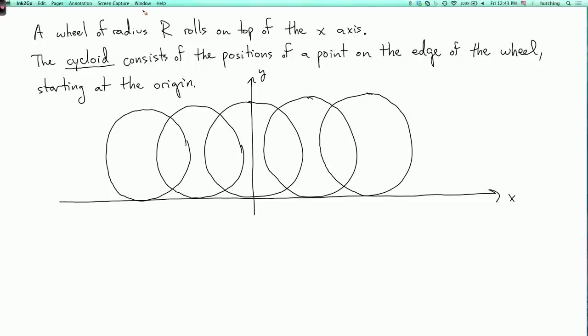So we have a wheel of radius r, and it is rolling along the x-axis, on top of the x-axis. And we have a point on the edge of this wheel, and we want to track where does the point on the edge of the wheel go as the wheel rolls?